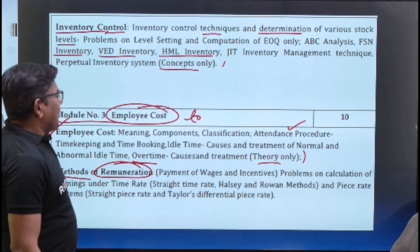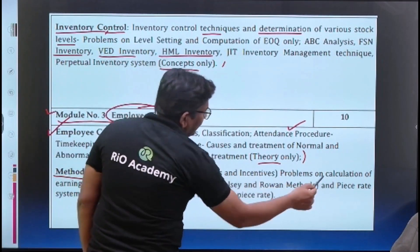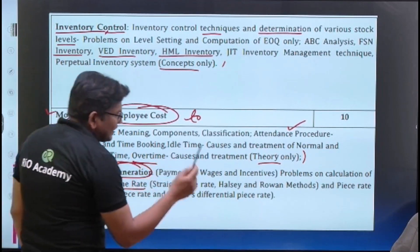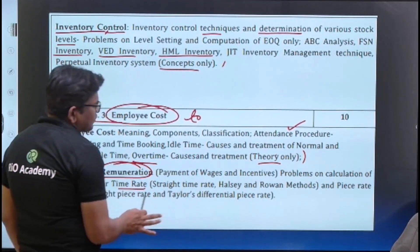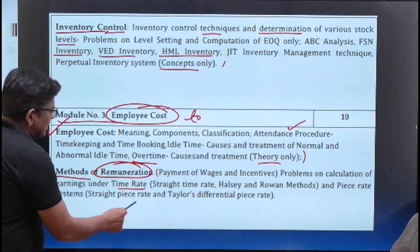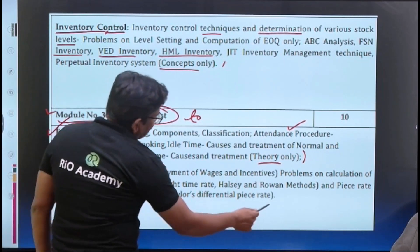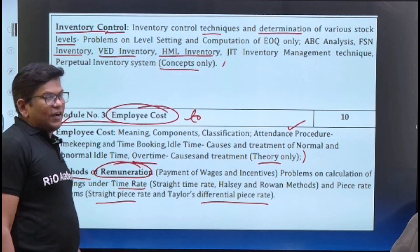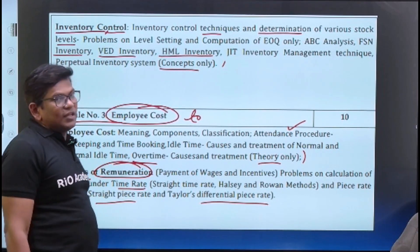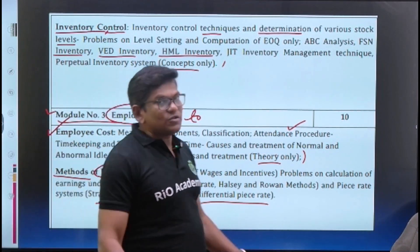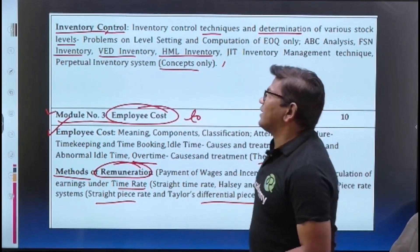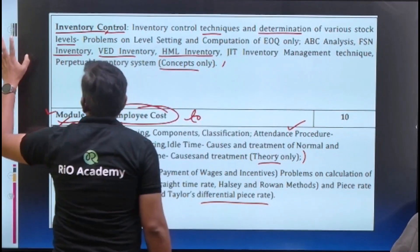Moving to the remuneration part — payment of wages — we have problems on calculation of earnings under different wage systems: time rate, piece rate, Halsey-Rowan plan, straight piece rate, and Taylor's differential piece rate system. We will upload many videos on this very soon, and we will also take a live session if you want.